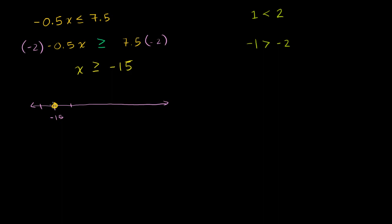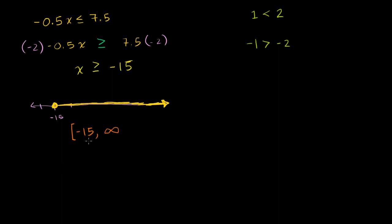Greater than or equal to negative 15 is the solution. You might also see solution sets to inequalities written in interval notation. We want to include negative 15, so our lower bound is negative 15. Putting a bracket here means we're going to include negative 15 — the set includes the bottom boundary. And we're going to go all the way to infinity, using a parentheses there. Parentheses normally means you're not including the upper bound — and you also use it with infinity, because infinity isn't a normal number; you're never actually at infinity.